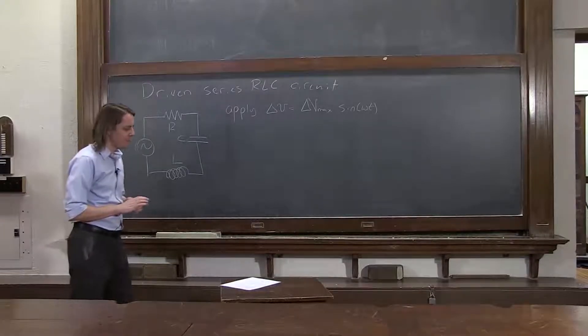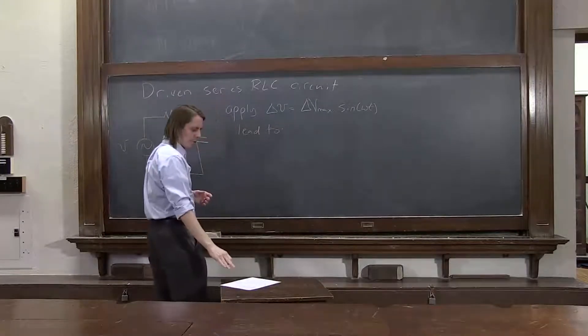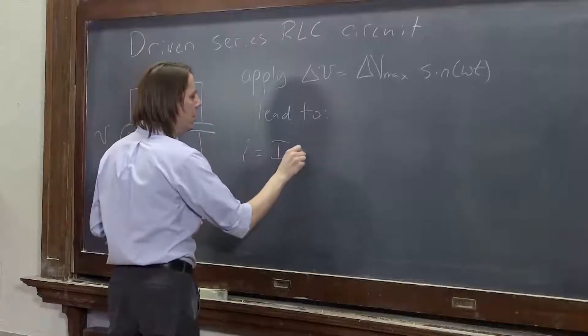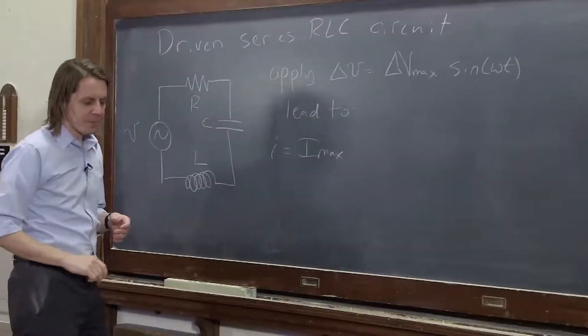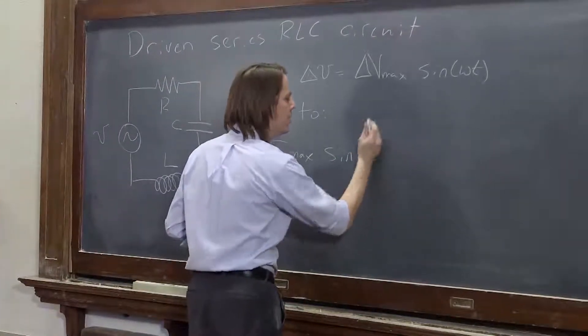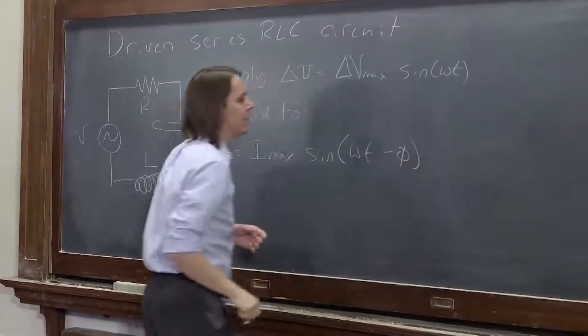So you'll see it, I promise. Right now, let me just tell you that this will lead to a current, an oscillating current, I, I max sine omega t, and it's going to be some phase lag, minus phi.